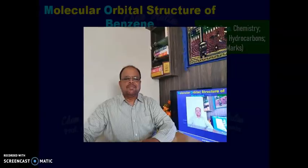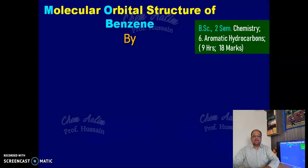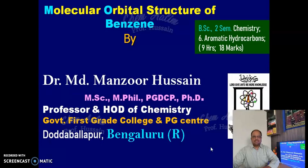Hello and welcome to my online portal of chemistry, Kemalim. This website is designed for BSc Chemistry students. In future, most of the topics will also be covered from the 2nd PUC syllabus to help those students as well. Today we are going to discuss the molecular orbital structure of benzene, which is part of the 2nd Semester Chemistry BSc syllabus under the chapter Aromatic Hydrocarbons.